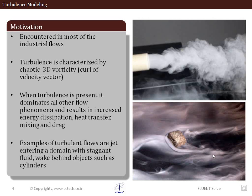All flow properties get distributed within the domain quite efficiently when turbulence sets in. Some examples: turbulent flow can occur when a jet enters a stagnant fluid and starts interacting with it, becoming turbulent. There can also be a wake behind cars or blunt bodies, which also cause turbulence.